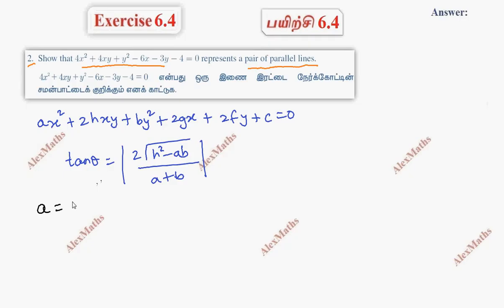The coefficient of AX squared is 4, 2H is 4 so H is 2, and B is 1. Now we apply the angle formula.